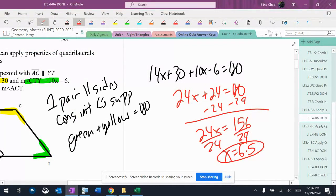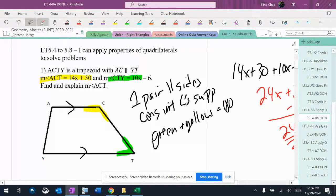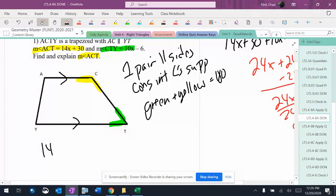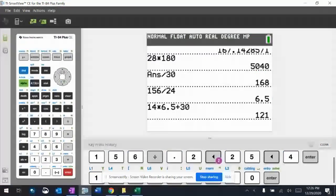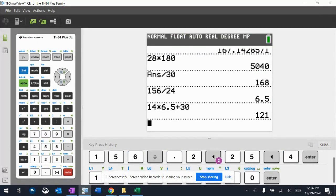And then like all this stuff, there's always a second part. The good news is it says find m∠ACT. That's ACT right there, so I'm going to plug 6.5 into 14x plus 30, which gives us 121.